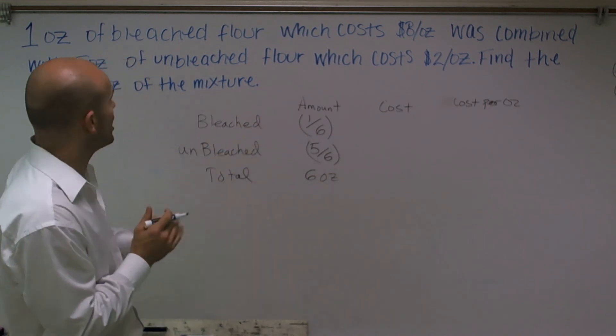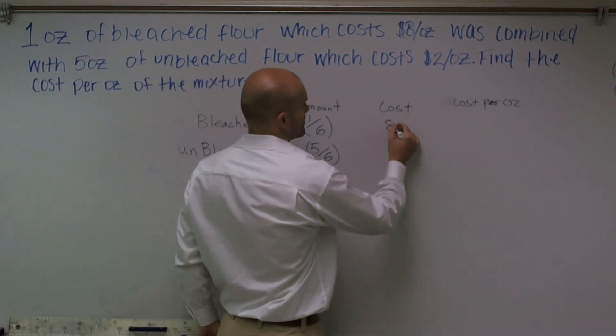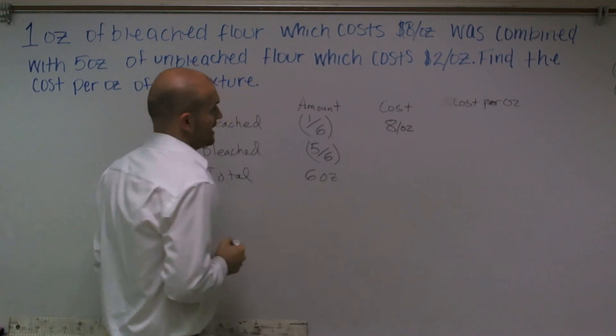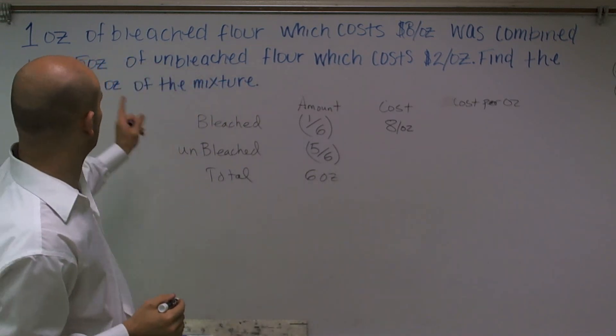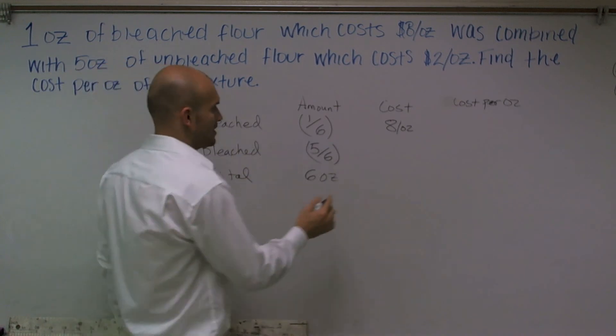Then we have a cost: for the bleached was $8 per ounce and the unbleached was $2 per ounce.